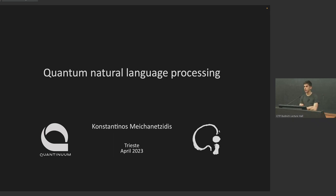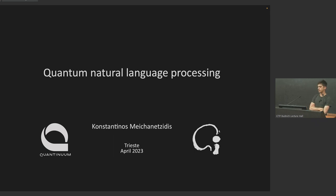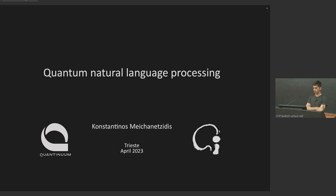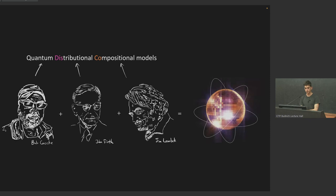I will briefly show you some of the results we have obtained — if you want more details we can talk later. At the very end I will show you a specific experiment, basically a blueprint, but that doesn't mean it will be the only one. That is only the first step for large-scale QNLP with text circuits. So let's get started.